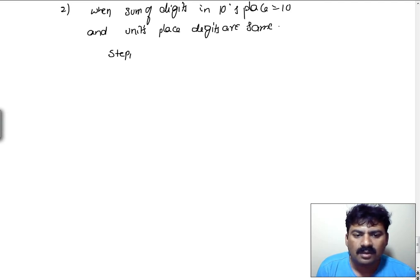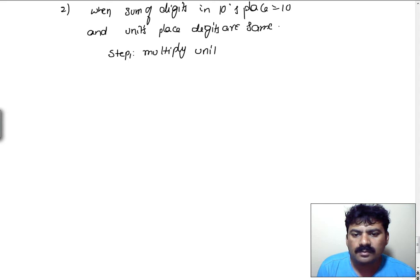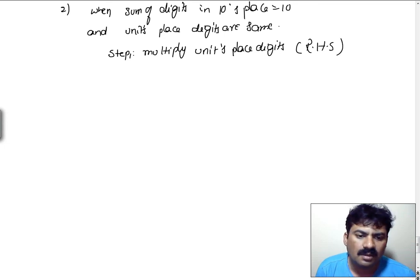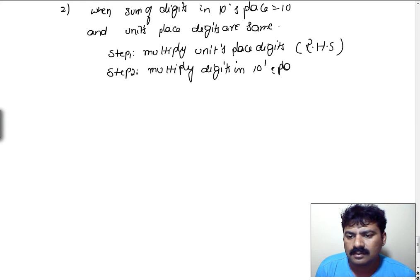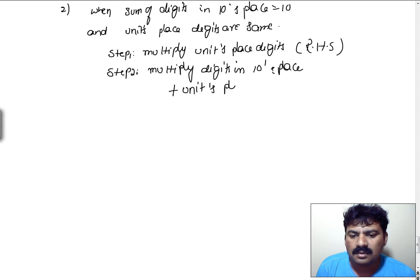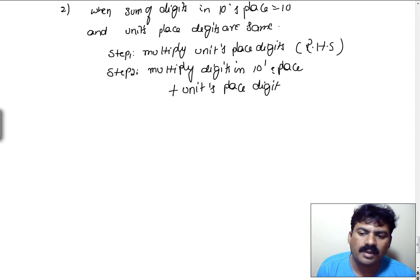In step 1, we just need to multiply the units place digits, which is going to give the RHS part of the answer. In step 2, multiply the digits in the tens place, then add the units place digit — this gives the LHS part.